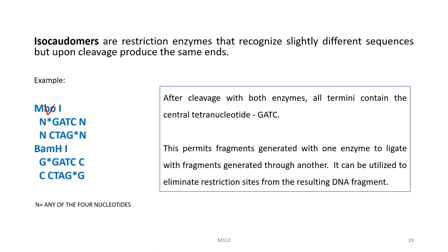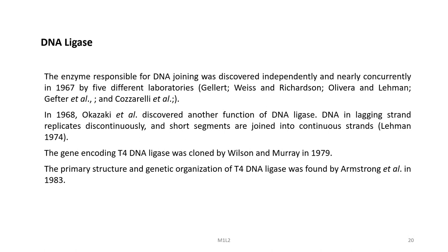These isocaudomers permit fragments generated with one enzyme to ligate with fragments generated through another. They can be utilized to eliminate restriction sites from the resulting fragments. So now we know a lot about enzymes which digest DNA and generate either sticky ends or blunt ends.